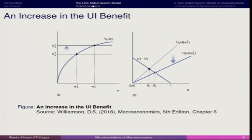We can see the original equilibrium. Now it has moved from U* to W1, which means that if unemployment insurance benefit goes up, we see more bargaining happening in the labour market. The wage rate has also gone up — from W1 to W2* — and this has resulted in an increase in unemployment. Earlier unemployment was U1, but now it is U2.